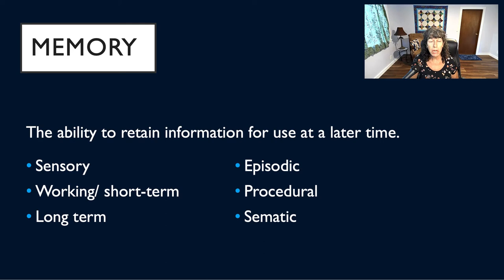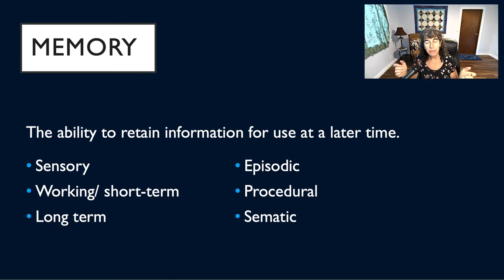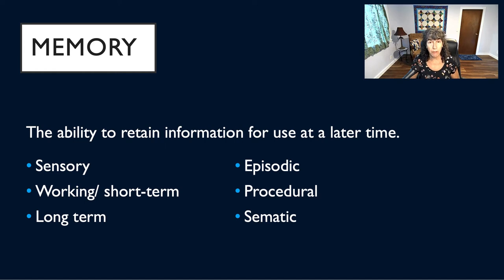When someone has, for example, a traumatic brain injury or another condition that impacts their memory, they may remember things from very far away but not have great working or short-term memory. They might remember procedures for things but not facts about something. We bring up all these different kinds of storage and types of memory because if someone has a brain injury, dementia, or Alzheimer's, their memory can suffer in a number of different ways.